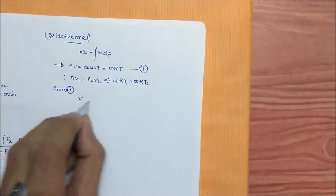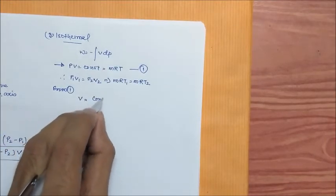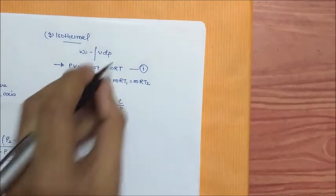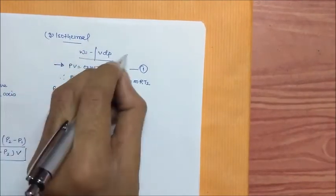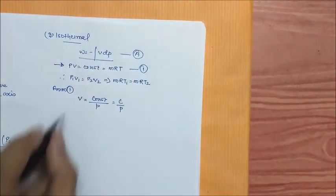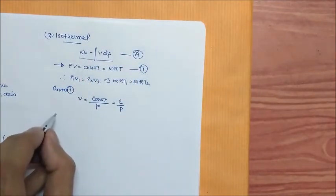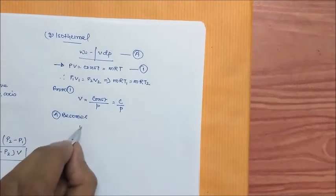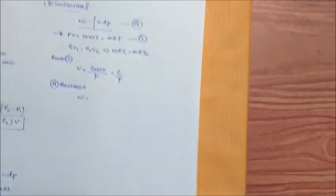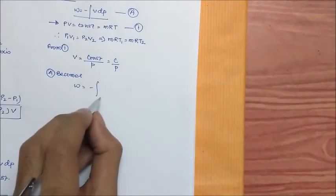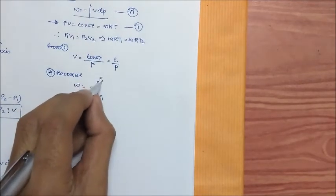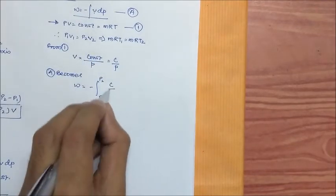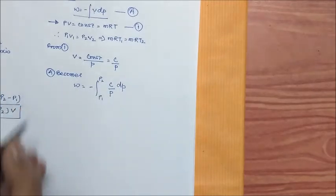From this equation, equation 1, we can say that V equals constant by P, or C by P. Now put this in your generalized equation. A becomes W equals minus integral P1 to P2, substituting V as C by P dp.